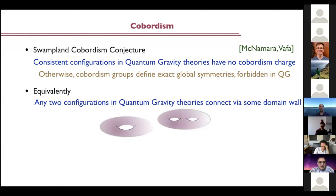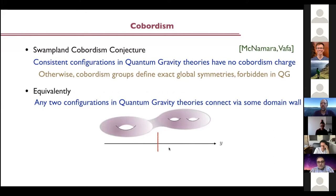Another equivalent way to phrase the cobordism conjecture is that any two configurations in quantum gravity should be able to connect at the topological level by some kind of domain wall. If you have two theories — like different compactifications — there is some kind of connection you can construct, allowing the configuration to evolve in some direction by building this kind of bridge. This represents a domain wall separating two different theories, or two phases of the same theory. The conjecture says any two theories should be connectable in this way by some kind of domain wall.